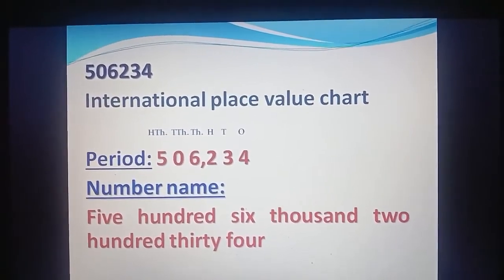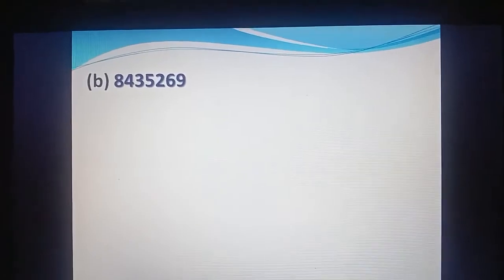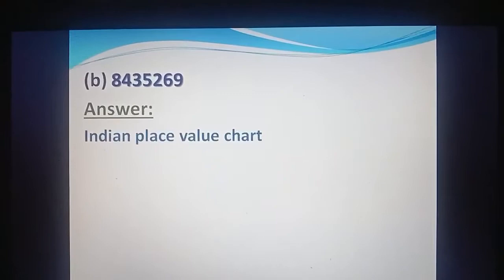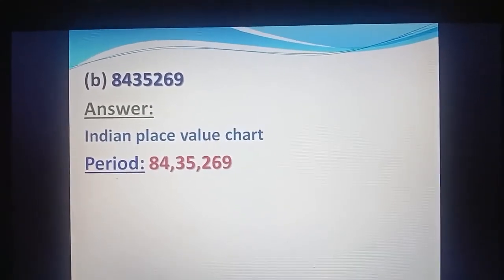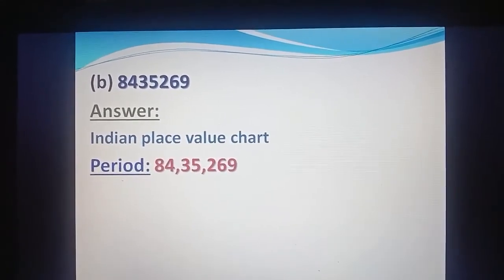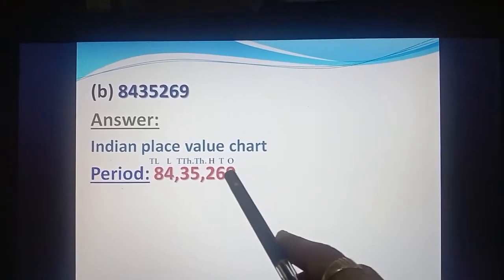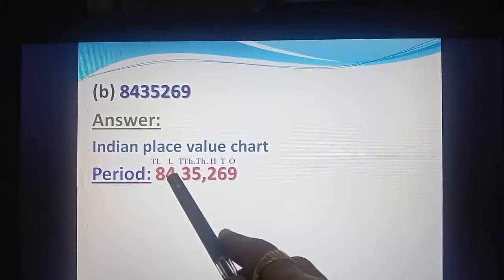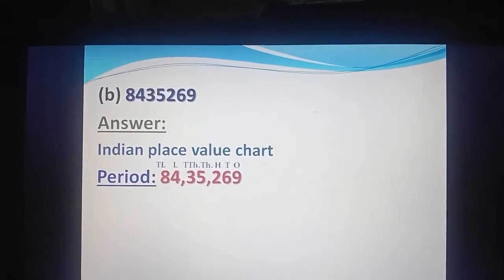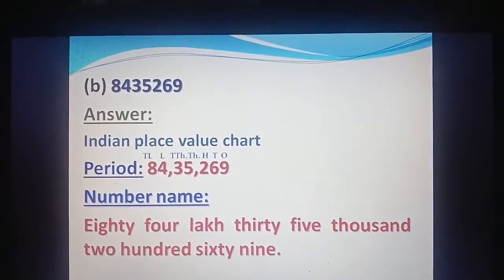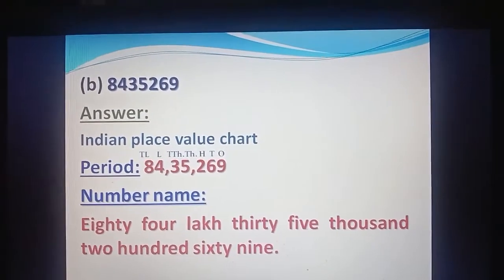Now come to B part, that is 8435269. We write the number name according to the Indian place value chart. According to its period: 84,35,269, and assign places — ones, tens, hundred, thousand, ten thousand, lakh, and ten lakh. So its number name is eighty-four lakh thirty-five thousand two hundred sixty-nine.